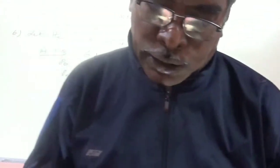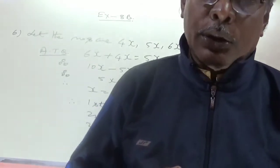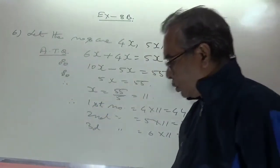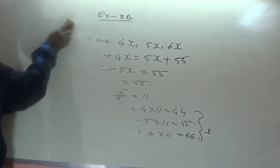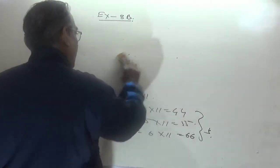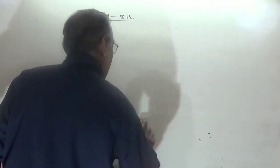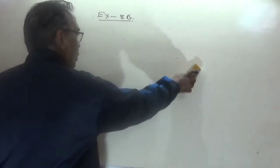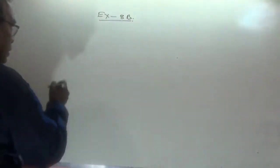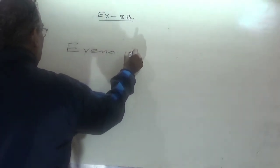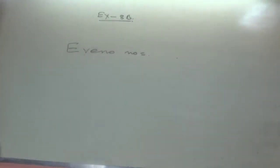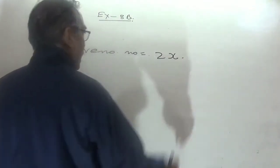Now, before the next question, let us discuss odd and even numbers. If you are asked to assume an even number, always take it as 2x — not simply x. Because whatever integer you substitute for x, 2x will always be even. For example, x = 3 gives 6, x = 4 gives 8, both even.